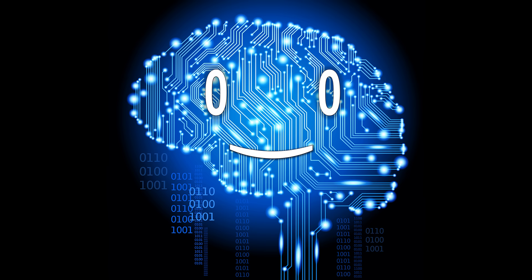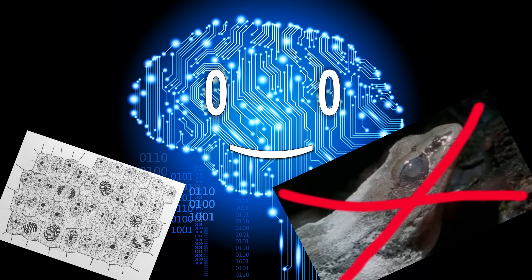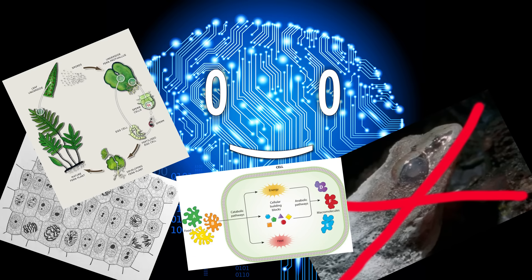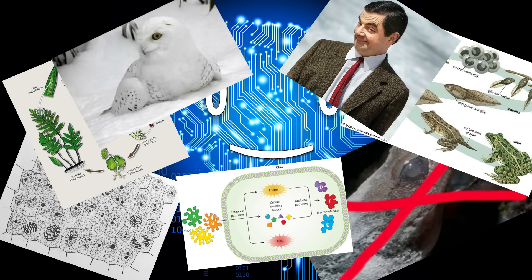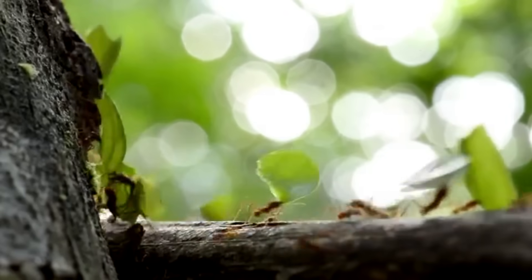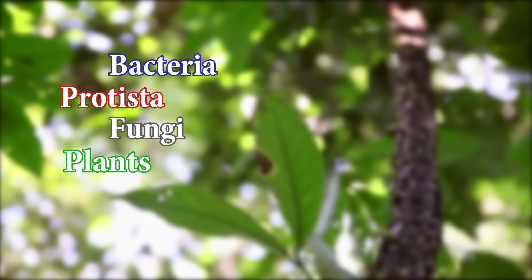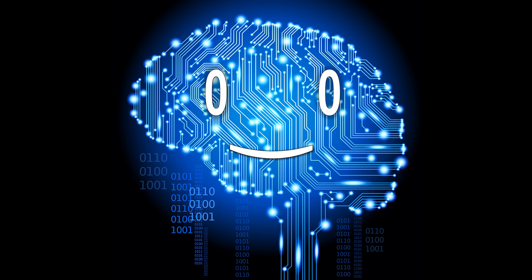For something to be classified as a living being, it must be composed of cells, be able to maintain homeostasis, undergo metabolism, have a life cycle, be able to grow, adapt to the environment, and reproduce. The stuff that is considered alive is classified in five kingdoms: bacteria, protesta, fungi, plants, and animals. There are more systems of classification, but this one is the most popular.